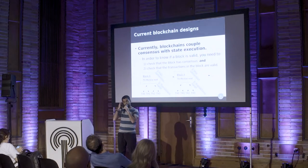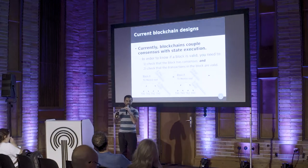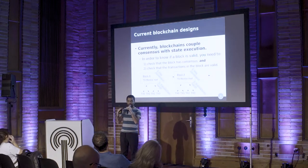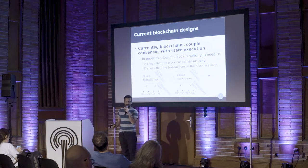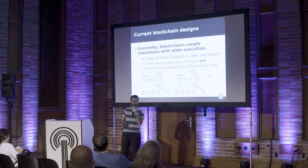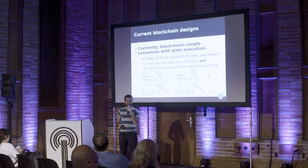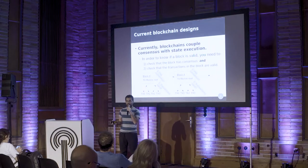Currently most blockchains use a similar design paradigm where consensus and state execution are coupled together in the same layer. What I mean by that is that if you run a full node and you want to check that a block is valid, you basically need to do two things. The first is to check that the block has consensus. In the case of Bitcoin or Ethereum, that would mean checking that the block is in the chain with the most accumulated proof of work.